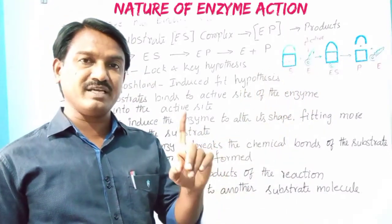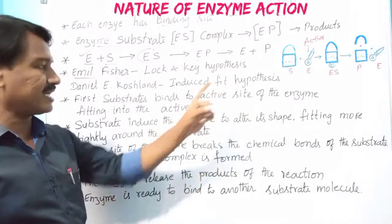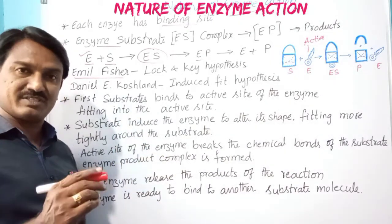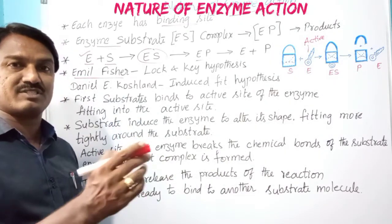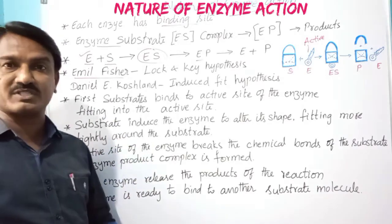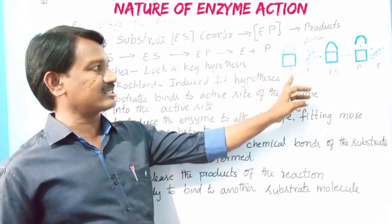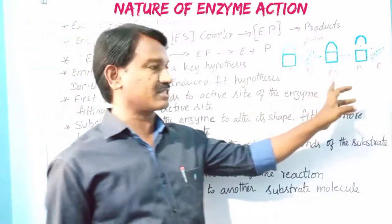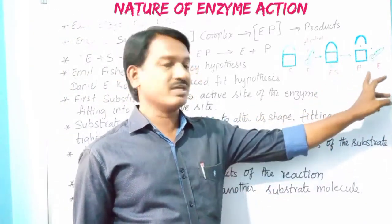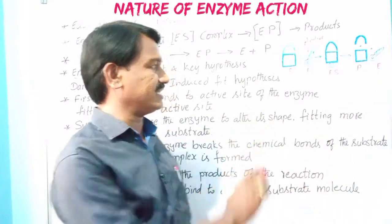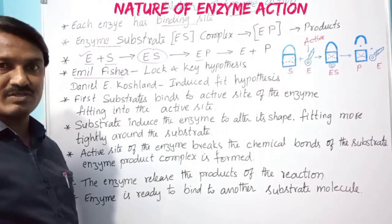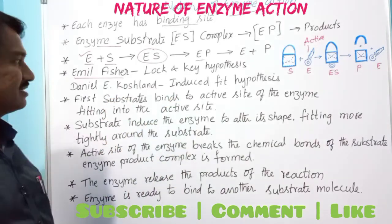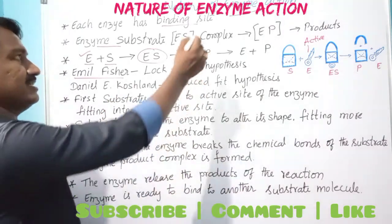Just as one key acts on only one lock, one enzyme acts on only one substrate. That is explained by Emily Fisher. Enzymes are involved in chemical reactions — enzyme activation sites are similar to the structure of the substrate, so one enzyme acts on only one substrate. A short-lived enzyme-substrate complex is formed, products are released, and there is no change in the structure of the enzyme. Enzymes only speed up the rate of reactions.